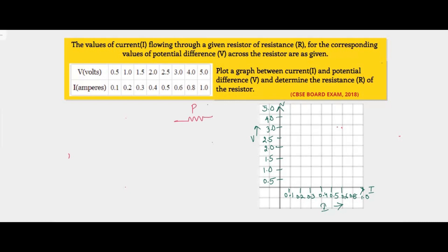Here we have a resistor R connected to a source of potential difference V, and there is an ammeter in the circuit to record the amount of current flowing. When this resistor is connected to the source of potential difference V, a certain amount of current will flow in the circuit. It is observed that in this experiment, when there is an increase in the value of potential difference, there is a change in the value of current.